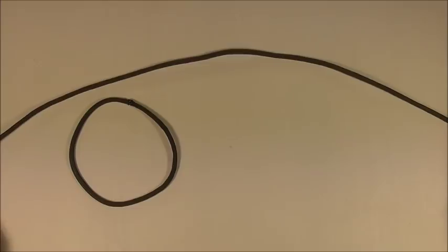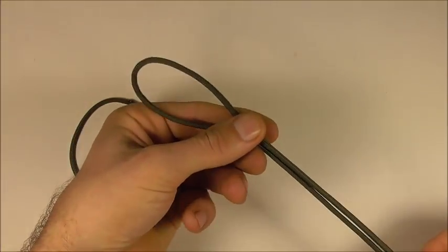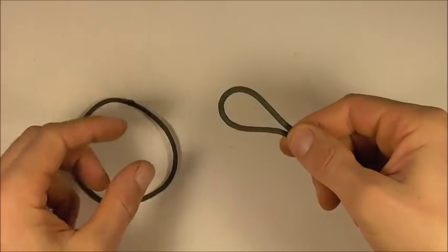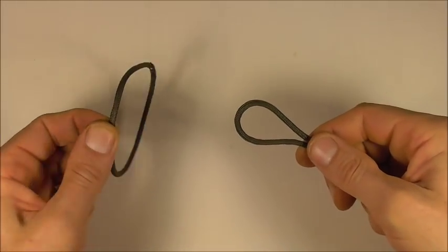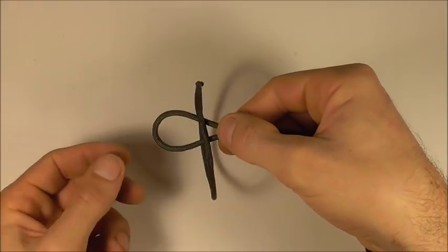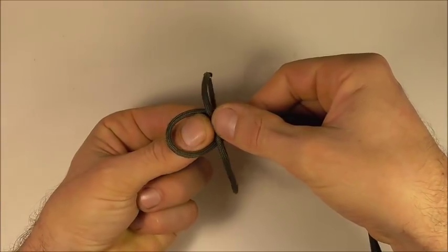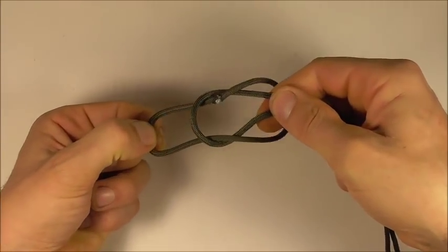When you've made your loop, take your other piece of paracord and fold it in half, then find the center. Take your loop and pass the bite through that loop, grab in underneath, and then pull that loop through. That should form your square knot.